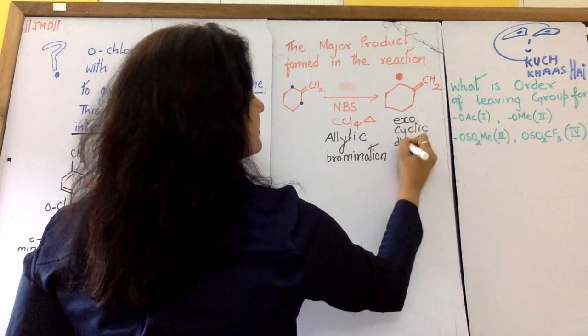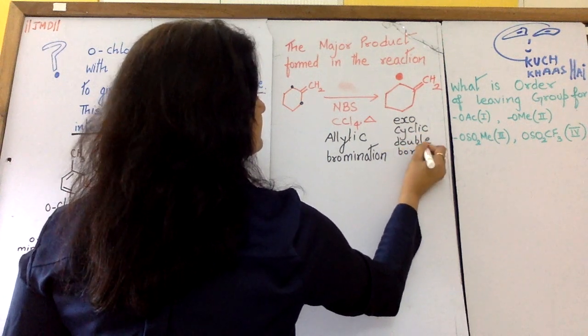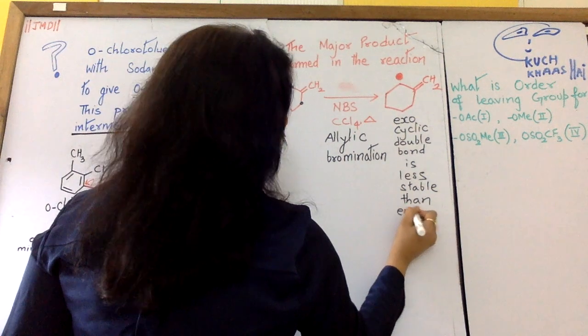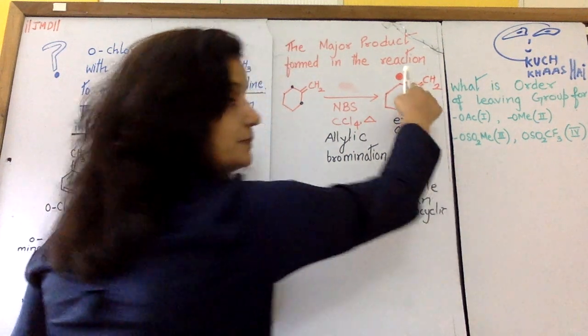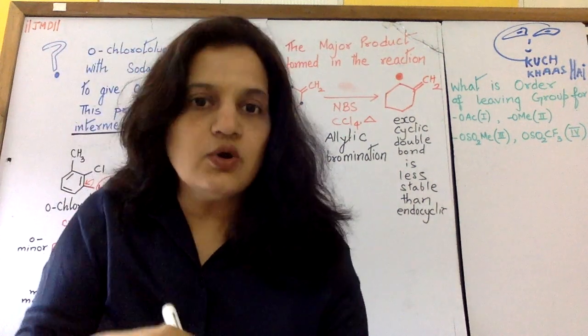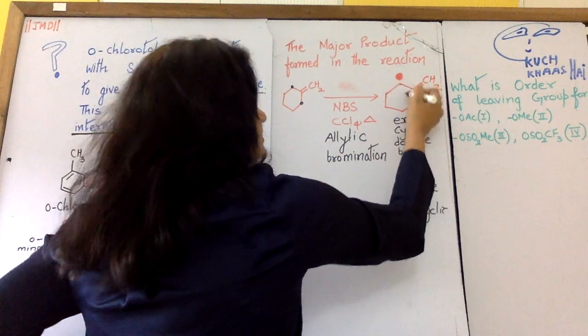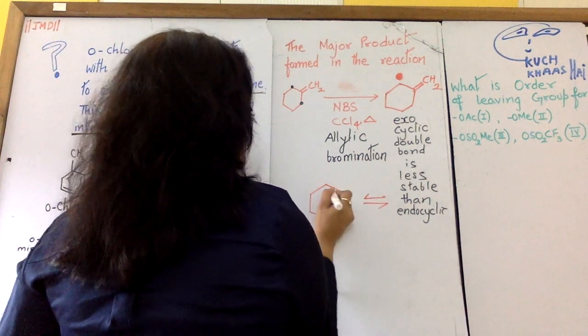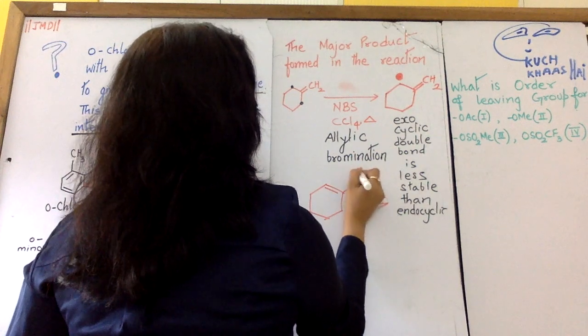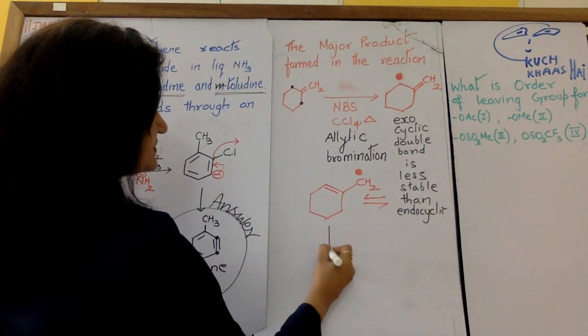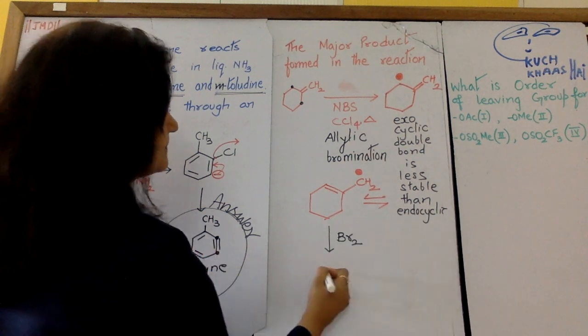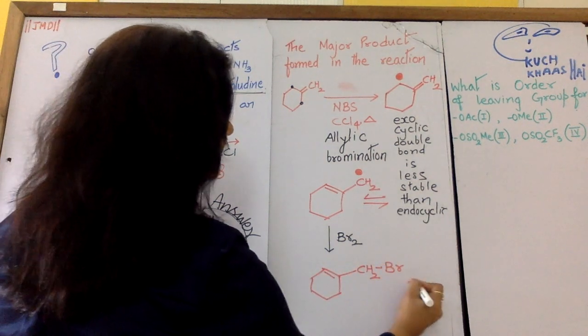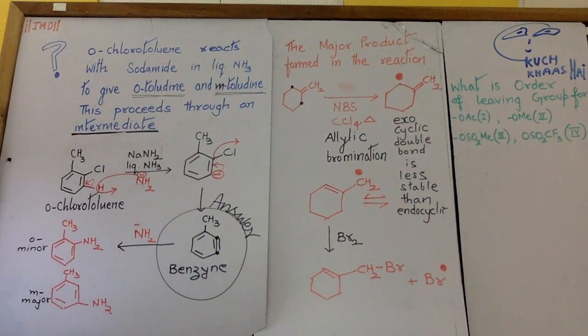Now children as you know, exocyclic double bond is less stable than endocyclic. This is how it rearranges itself. The pi bond shifts in and the free electron of the radical shifts out. Now the story is very simple. This attacks bromine, producing like this, and a free radical is formed.